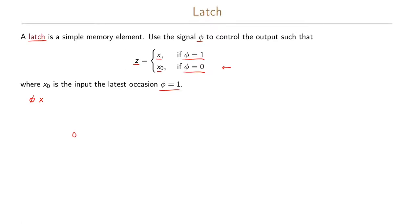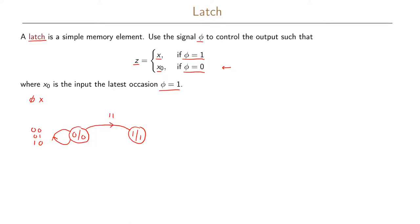The first state represents the situation where we output a zero from our latch, and the second state represents where we output a one. I'm writing this as a Moore graph. In the zero state, as long as phi is zero we keep outputting zero — so for inputs zero-zero and zero-one we stay in that state. We also stay and output zero if phi is one and x is zero. Only when phi is one and x is one do we go to the state called one and start outputting a one.